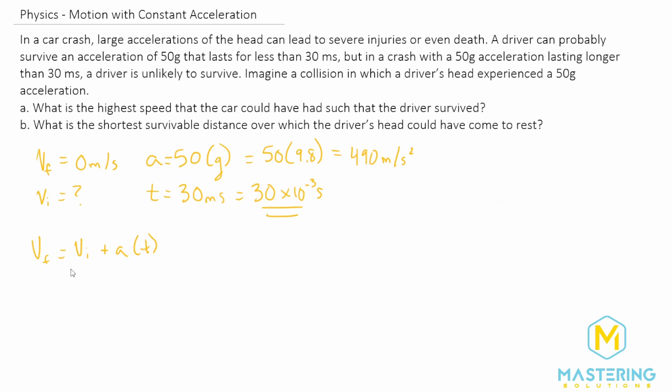So now we're solving for the initial velocities. Let's move that over to the other side. So we have V final minus V initial is equal to acceleration times time. The final velocity we set as zero, so we can get rid of that.